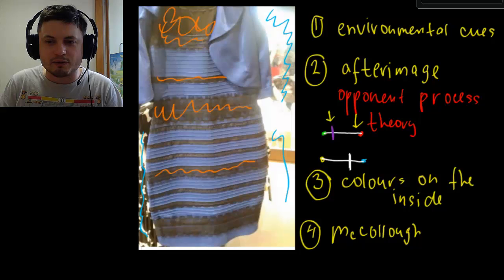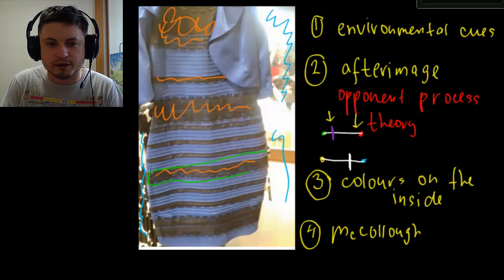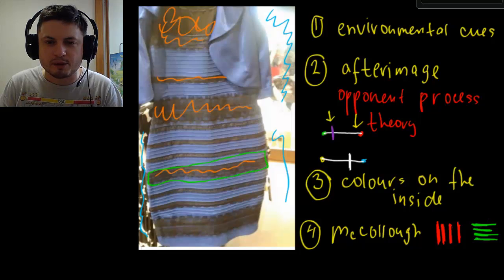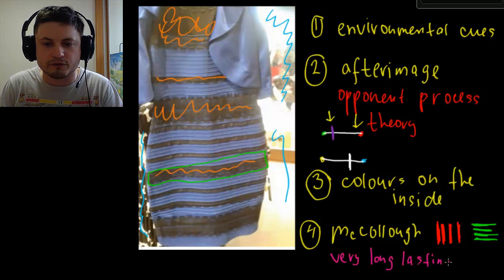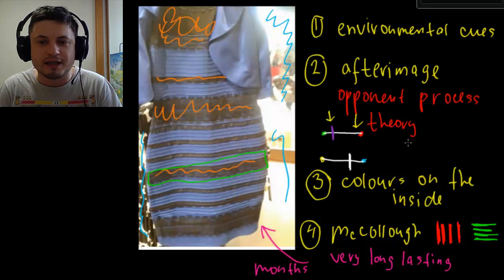If you saturate your eyes with a striped image — specifically the black-and-red and green-and-black striped images — and then look at a completely empty black and white image, you would see the inverse. The interesting thing about the McCullough effect is that it's a very long-lasting effect, so it would be very difficult to unsee this and could take months to see the gold and white again. These are some of the theories responsible for what we see here, but there are probably more phenomena we haven't even discovered yet.